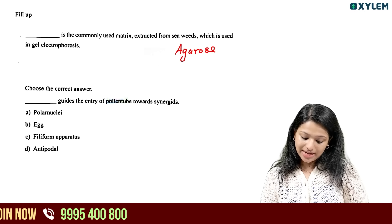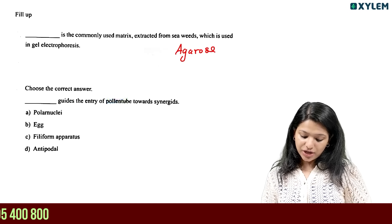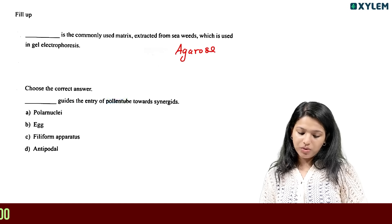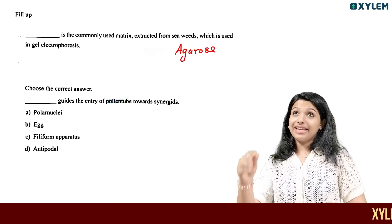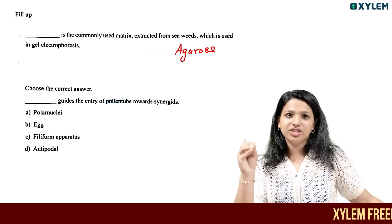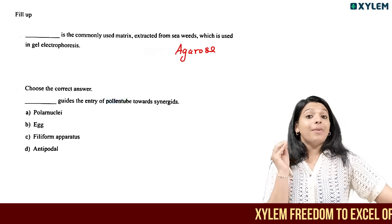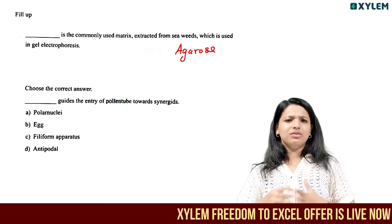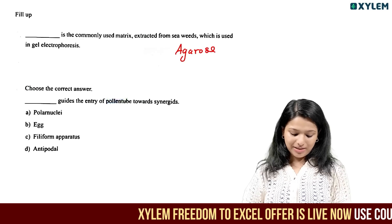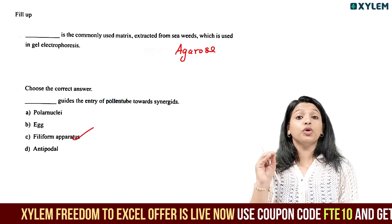Choose the correct answer. The filiform apparatus guides the entry of the pollen tube towards the synergids. The synergids guide the pollen tube. That is, the Filiform Apparatus.